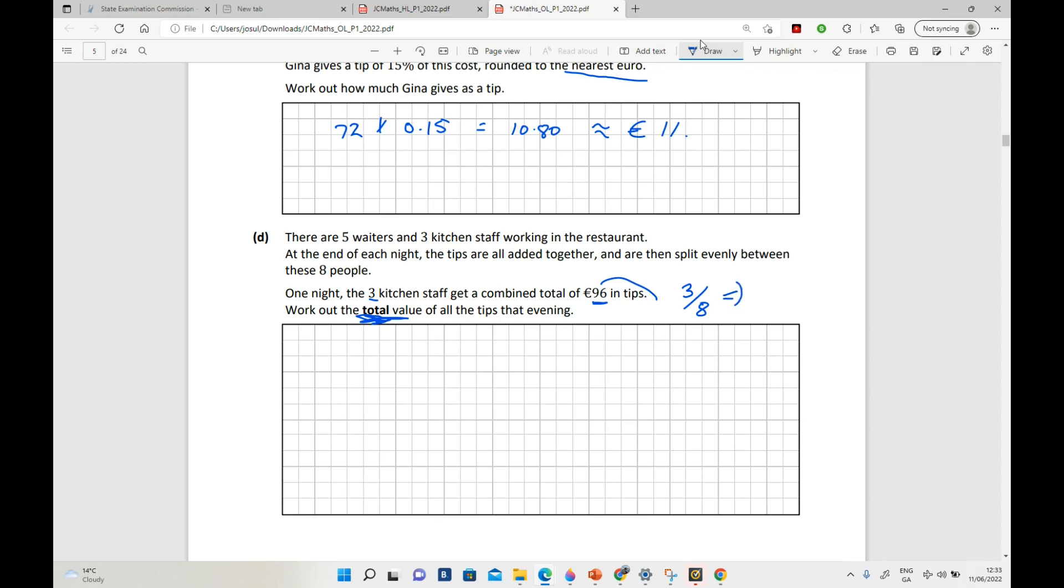Okay, so 96 euro equals three-eighths of the tips. And the reason for that is because we have three people of eight. Okay, so that's why it's 96. So what I need to do is get one-eighth, or get the money for one person.